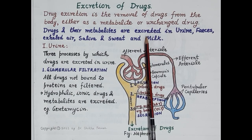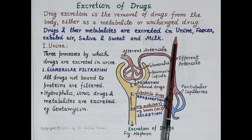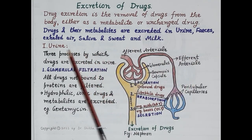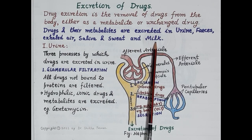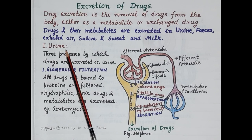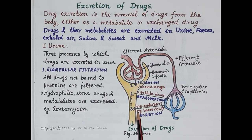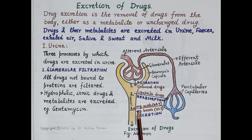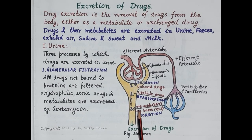Drugs and metabolites are excreted in urine, feces, exhaled air, saliva, sweat, and milk. The first route of excretion is urine — the majority of drugs are excreted in urine through the kidneys, making it the primary route of excretion. The nephron is the functional unit of the kidney. To understand how drugs are excreted in urine, let's go through the structure and functions of the nephron.